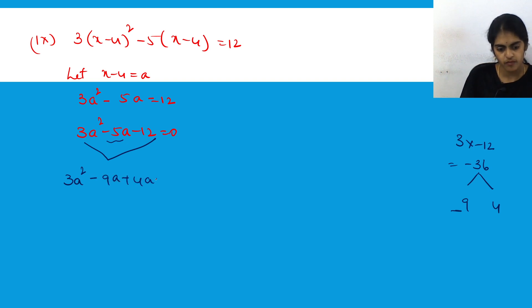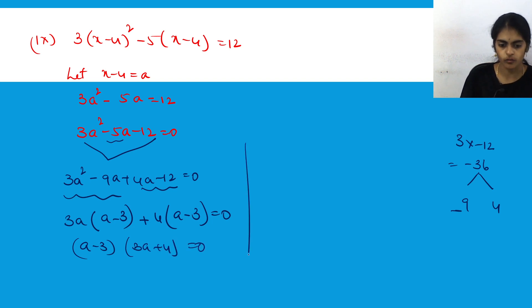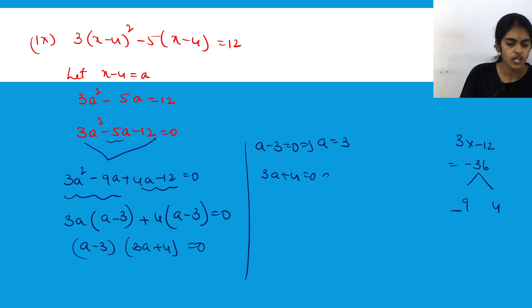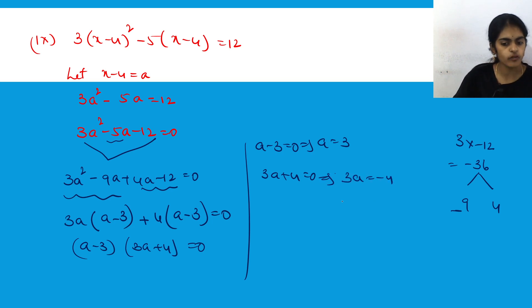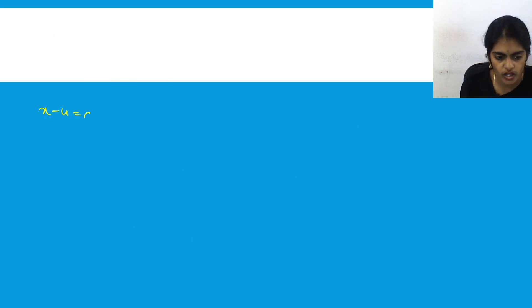So 3a² - 9a + 4a - 12 = 0. Taking 3a common from the first two terms: 3a(a - 3), and 4 common from the last two: 4(a - 3). Since (a - 3) is common: (a - 3)(3a + 4) = 0. Therefore a = 3 or a = -4/3.